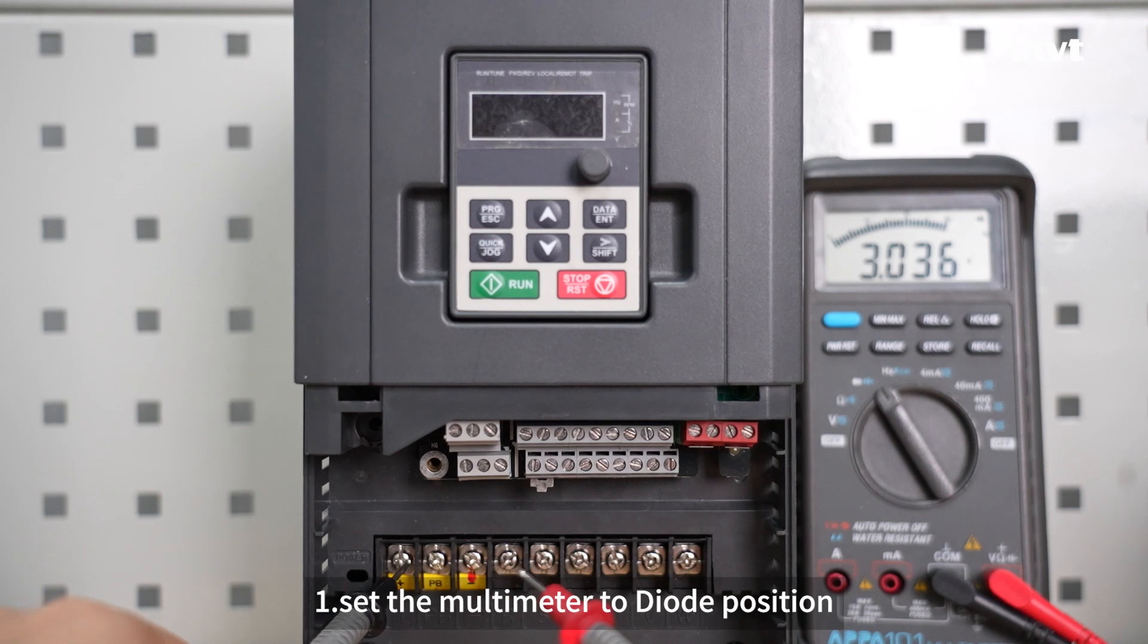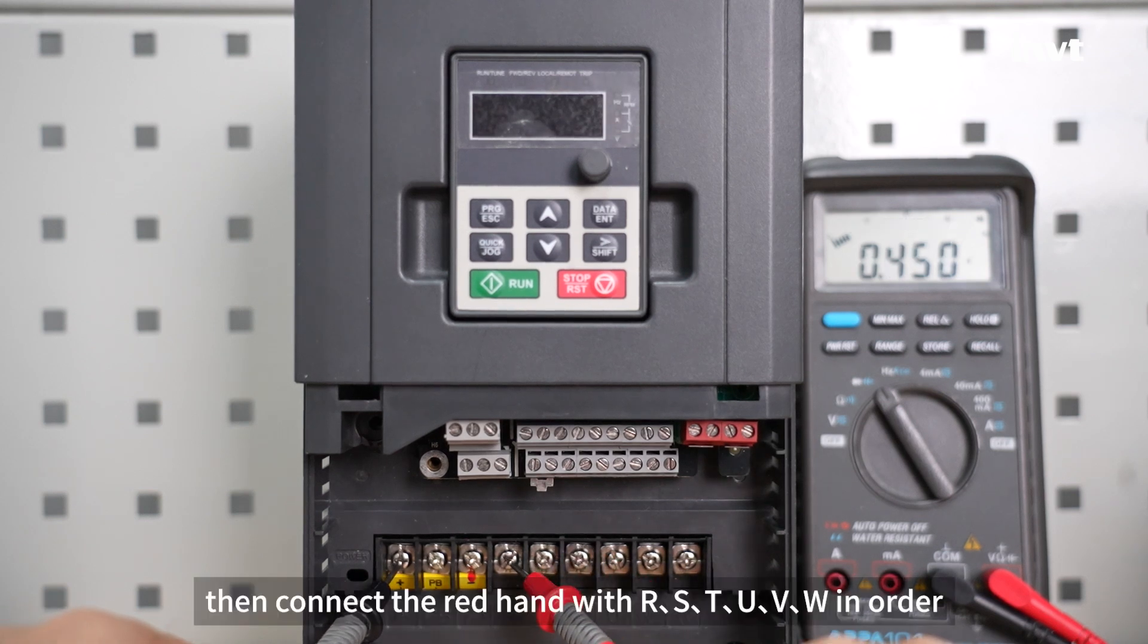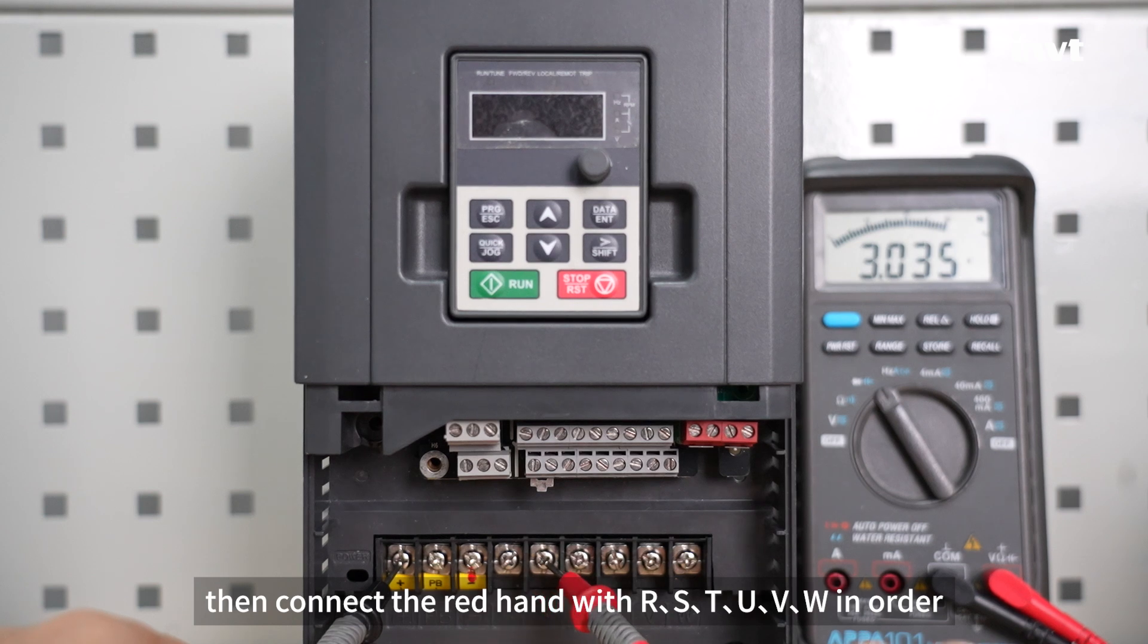First, set the multimeter to diode position, connect the black probe with plus. Then connect the red probe with RSTUVW in order.